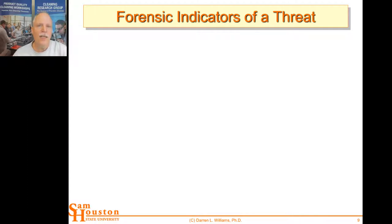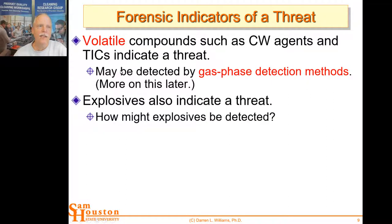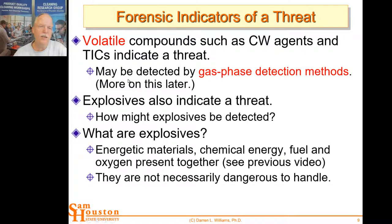In terms of forensic indicators of an upcoming threat, one of the most easily detected signatures for a bomb or some sort of disruptive device is that it must have a volatile component that we can detect. Chemical warfare agents and toxic industrial chemicals are volatile, so any gas phase detection technique will be able to detect them. Explosives also indicate a threat because they're not approved for civilian use, carry, or possession. So how might explosives be detected? Let's look at what explosives are and how explosive devices operate.